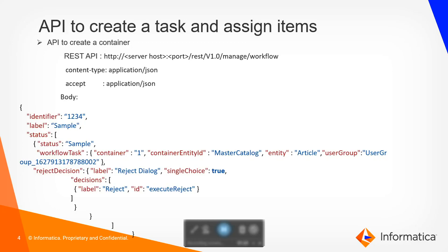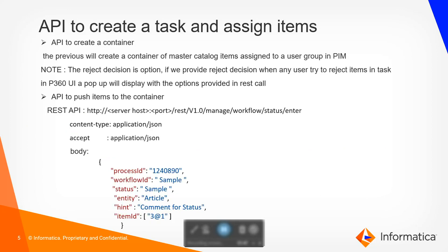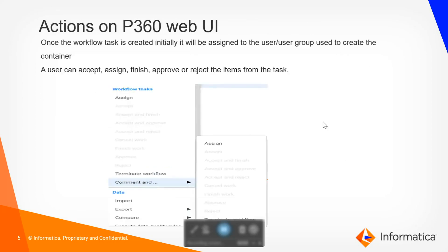Creation of a workflow task will be carried out in two different APIs. The first API we need to fire creates a task container, which holds the entity, the container ID — whether it is a master catalog or a supplier catalog — and the user, user group, or supplier to which the task container should be assigned. Once this API is created, we need to fire a second API to push items into this particular task container, using the process ID and the item's internal ID.